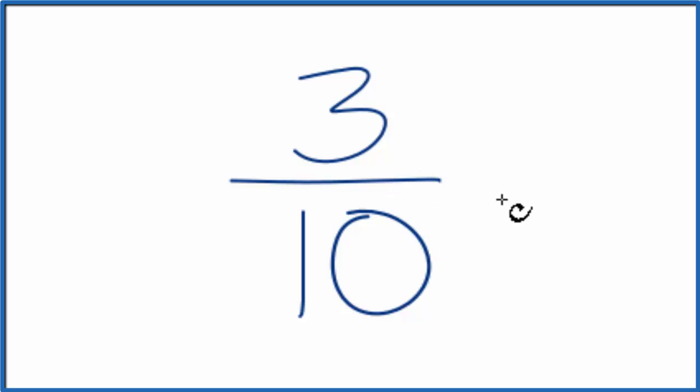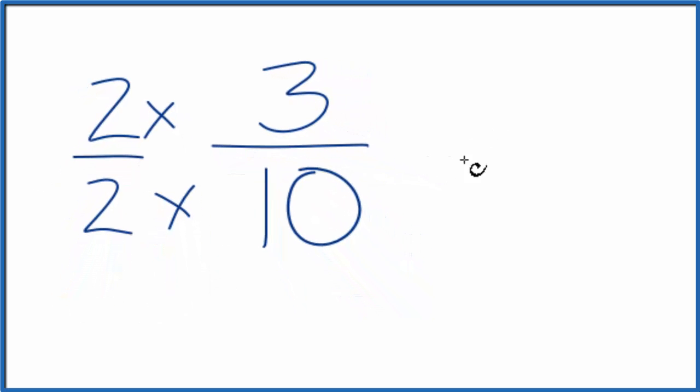If you wanted an equivalent fraction, you could multiply both the top, the numerator, and the denominator by 2 over 2. That would give you 6 twentieths, and that is an equivalent fraction to 3 tenths. They would have the same value.